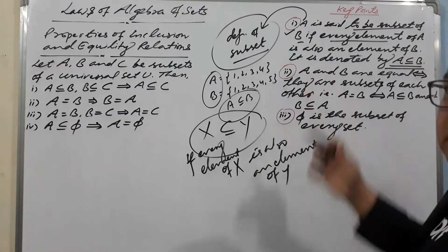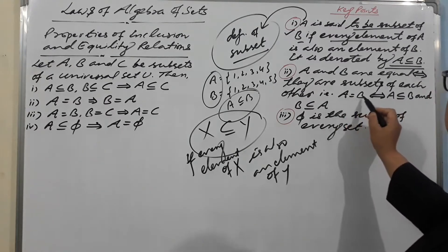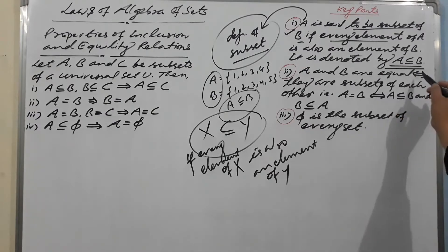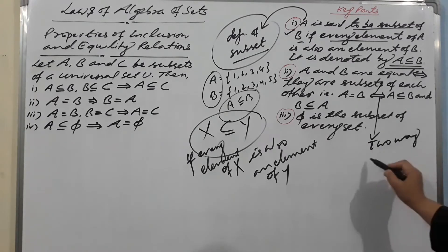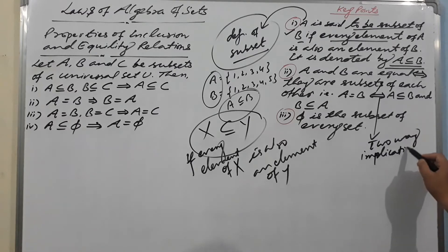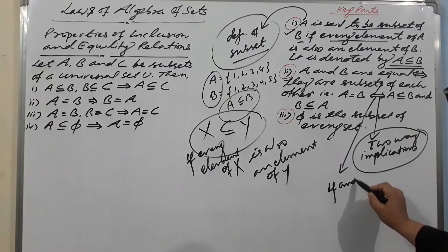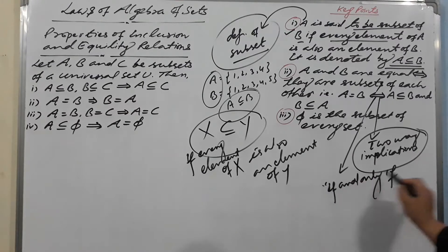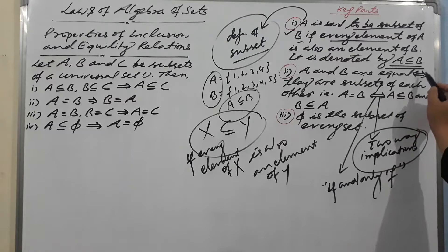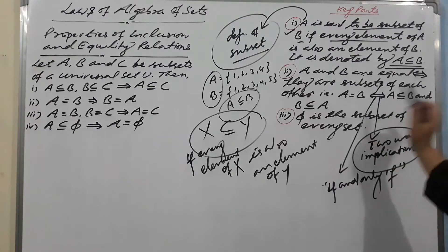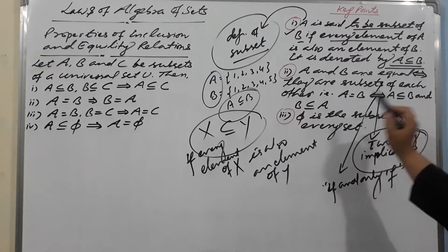The second key point: A and B are equal sets if and only if they are subsets of each other. That is, A = B if and only if A ⊆ B and B ⊆ A. The symbol '⟺' means two-way implication, and we read it as 'if and only if.'